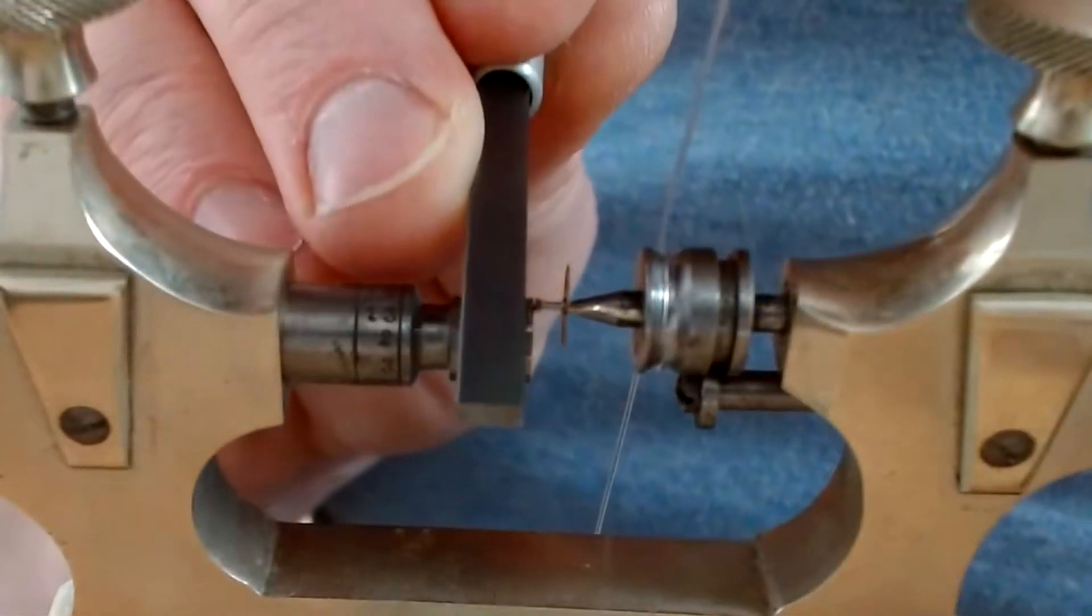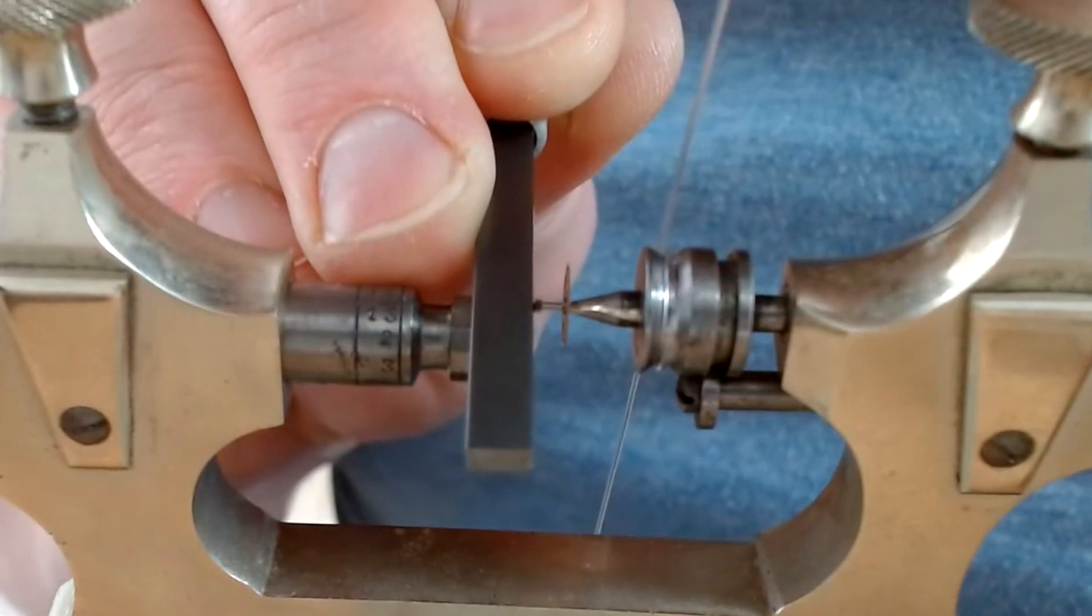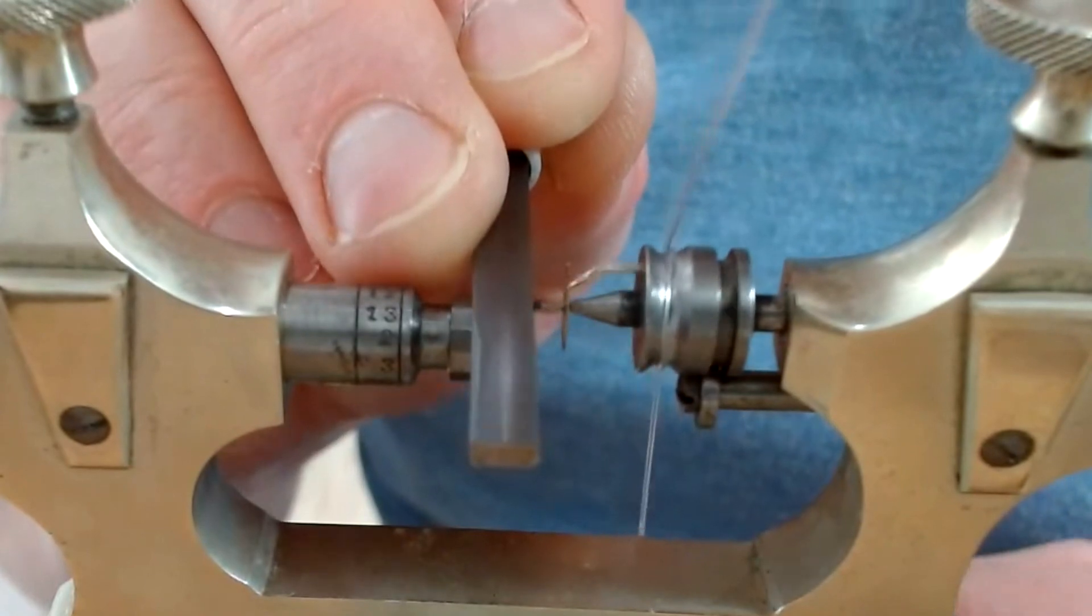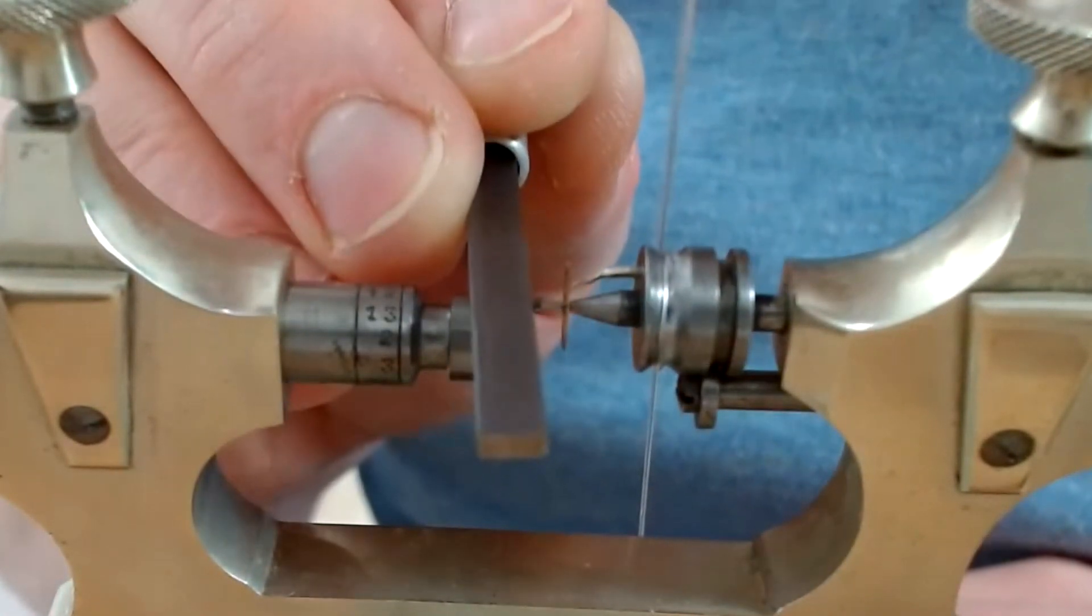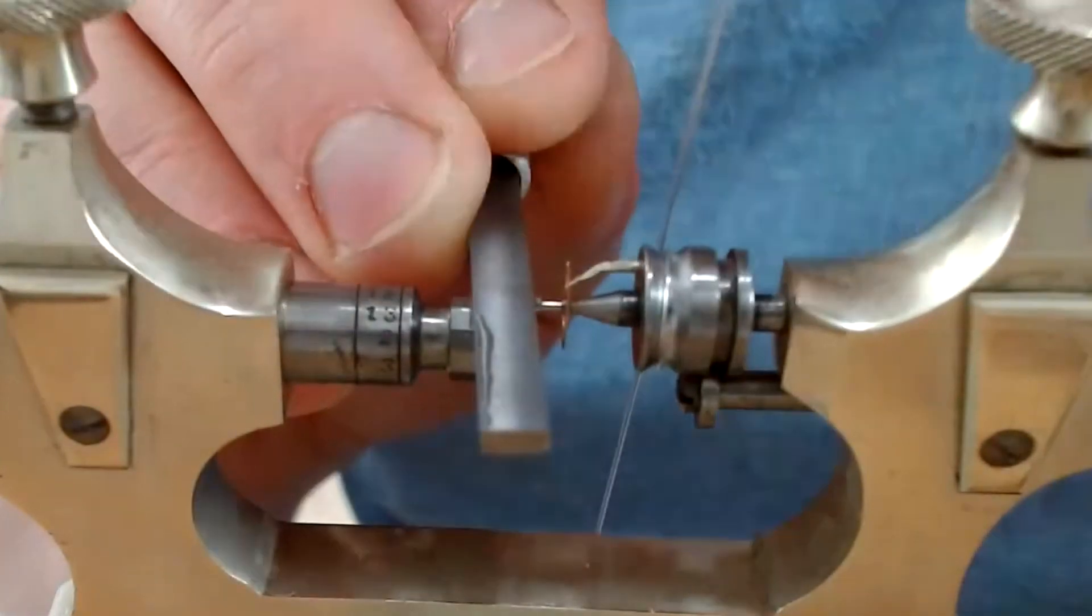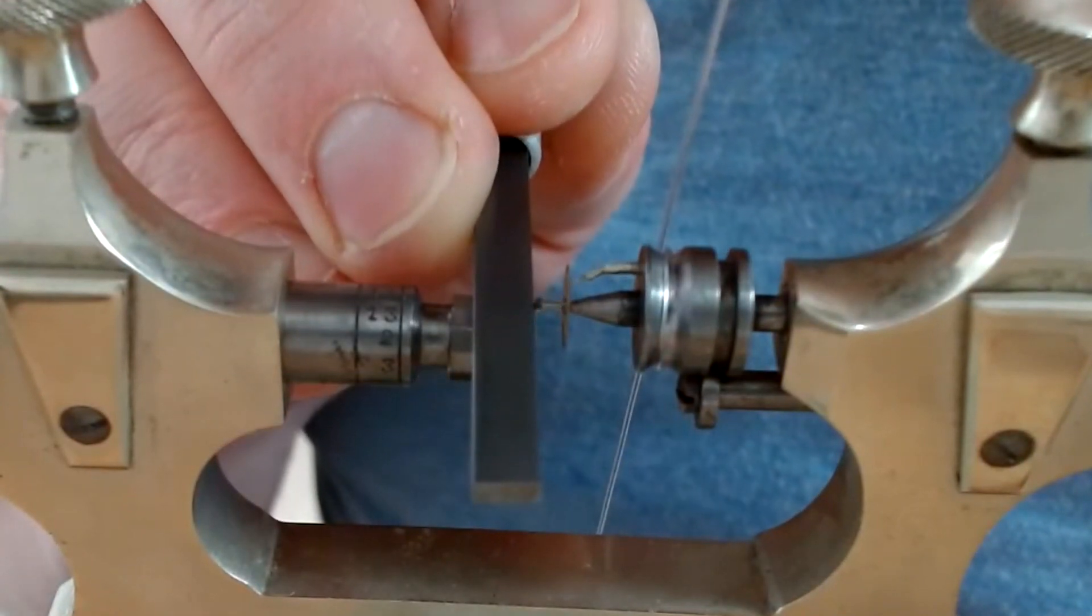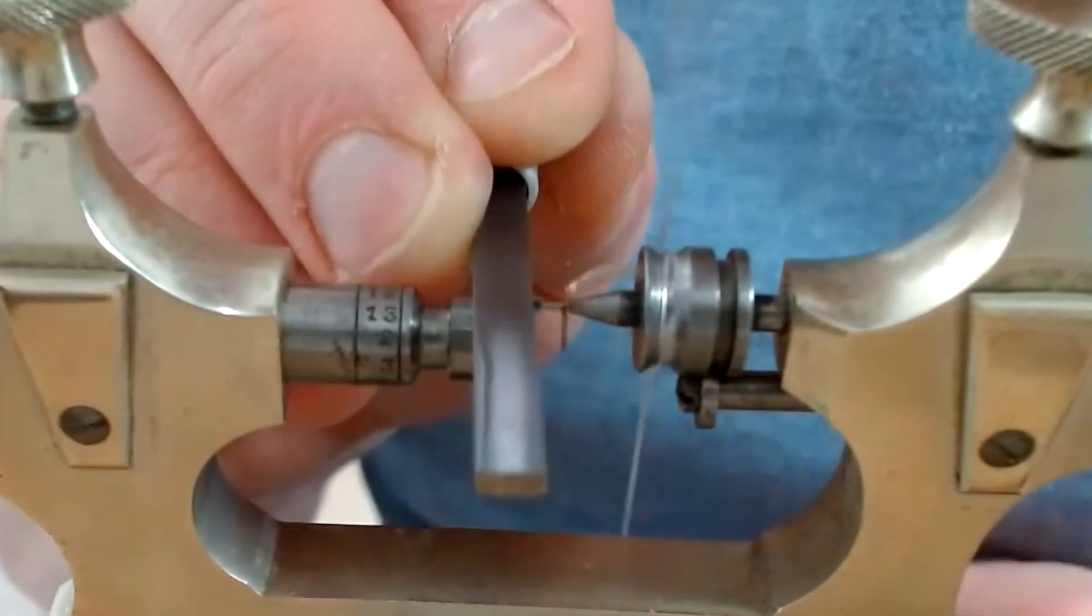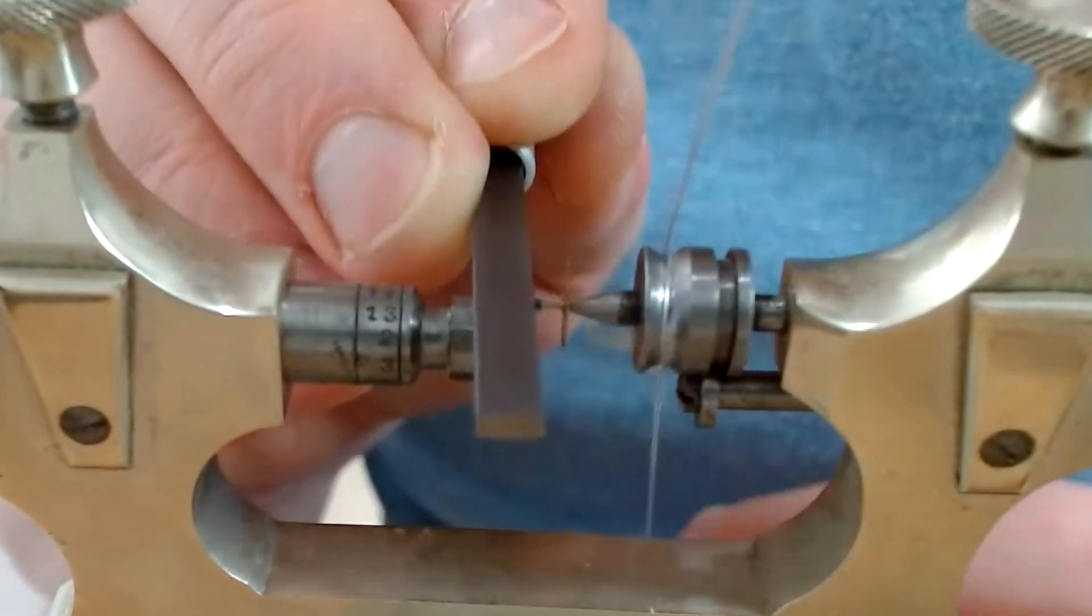So with everything checked in place we can bring the burnisher to the workpiece and get ready to burnish or polish these pivots. We move our left hand up and down to drive the wheel back and forth to get that speed going with our bow and we move our right hand back and forth to polish the pivot, so we're actually moving the wheel or the pivot at the same time as we're moving the burnisher itself.